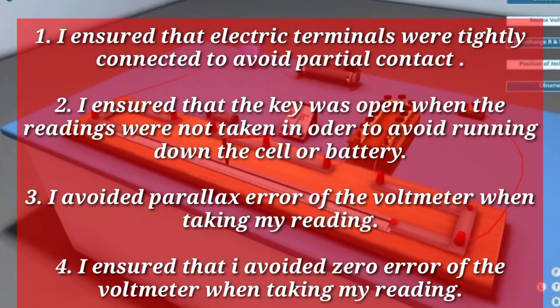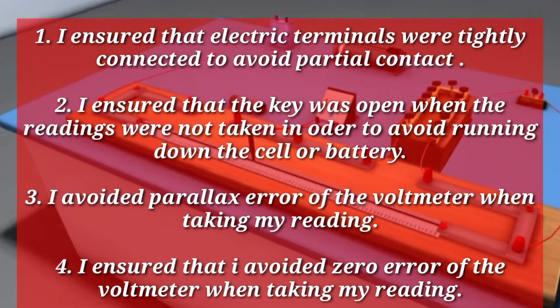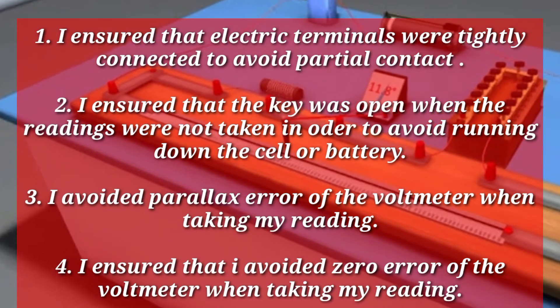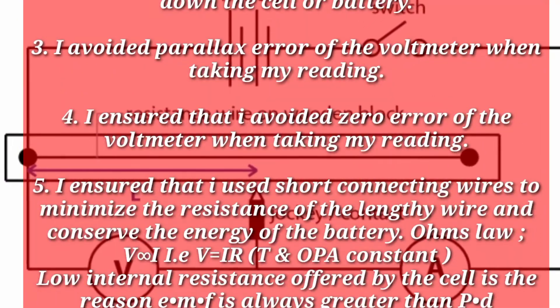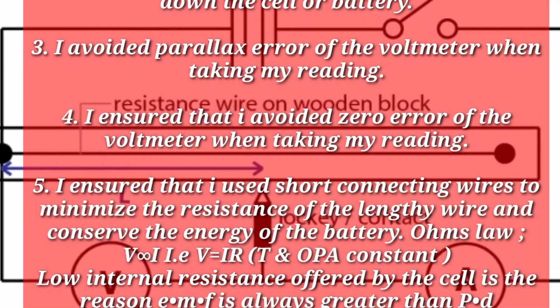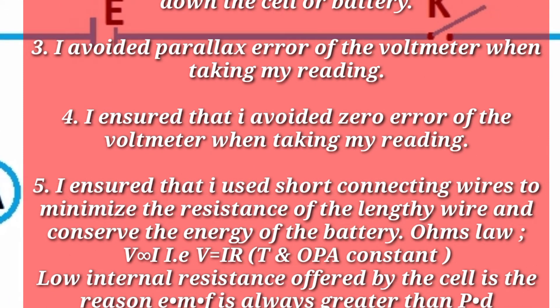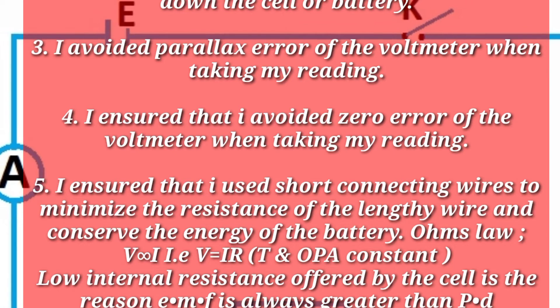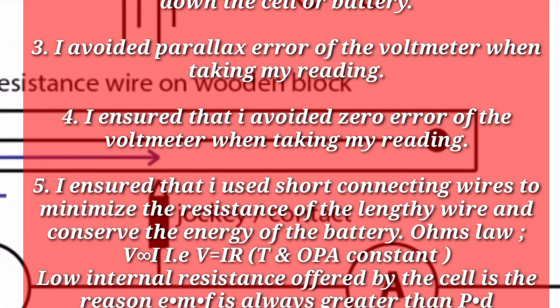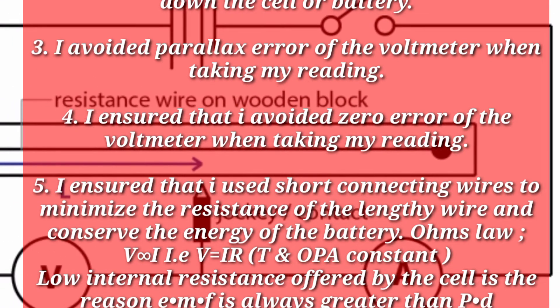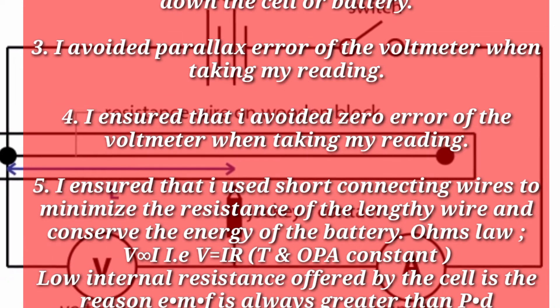Precaution 4: I ensured that I used short connecting wires to minimize the resistance of the lengthy wire and conserve the energy of the battery. Precaution 5: Ohm's law, V equals IR, at constant temperature.